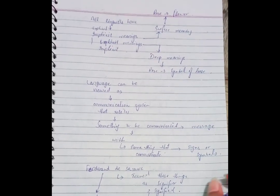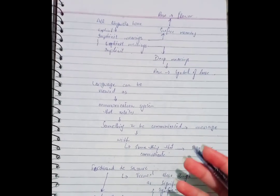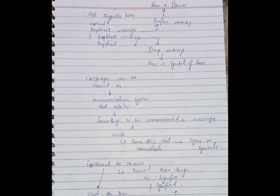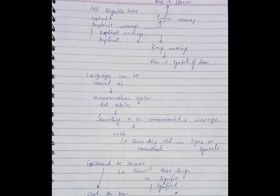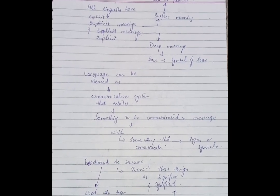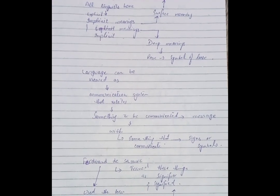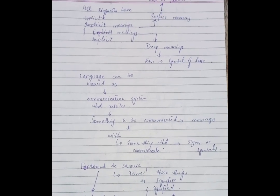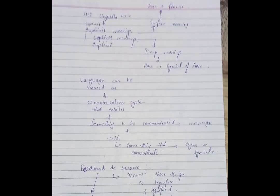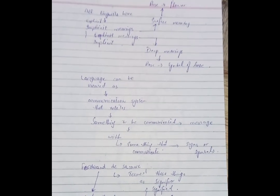But later on, his followers rejected this and said that a sign has nothing to do with the signified — it is only concerned with the signifier. This means, for example, a frying pan conveys meaning because it is a pan in which we fry things. But why do we call the red-colored flower a 'rose'? Is there any connection between the sign and the signified? No, there is no connection.